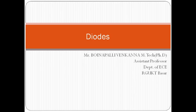Good morning students. In last class we discussed about the different types of capacitance offered by the diode — transition capacitance and diffusion capacitance. Generally, transition capacitance appears when the diode is in reverse bias and diffusion capacitance appears when the diode is forward biased. After that we discussed the equivalent circuit model of diode: the practical model, ideal model, and piecewise linear model. Using these equivalent circuit models we can analyze any diode circuit.